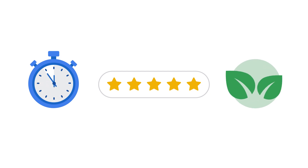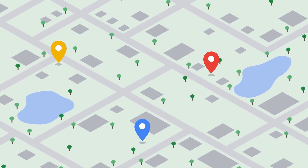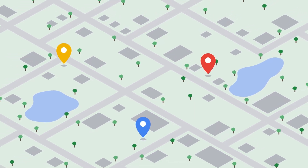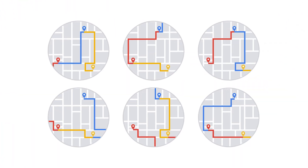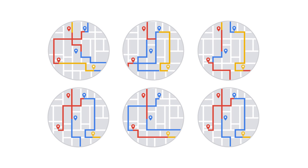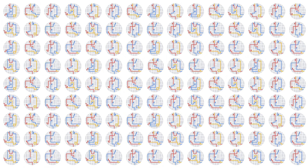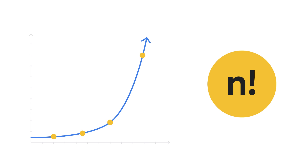Let's start with a simple scenario: a route with just three stops for a single vehicle. Assuming we are always able to get the most efficient path from one stop to another, there are six possible routes with different stop sequencing. Not so bad, right? But increase those stops from three to just five, and the number of possible routes jumps to 120. With each stop added to the list, the number of possible routes grows at an astonishing rate — it's called a factorial.